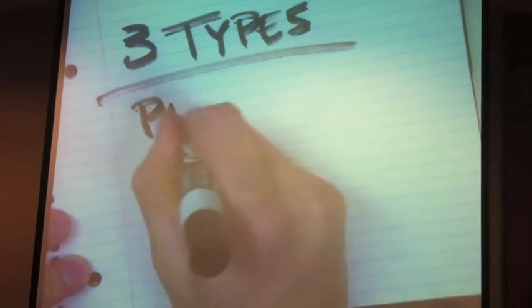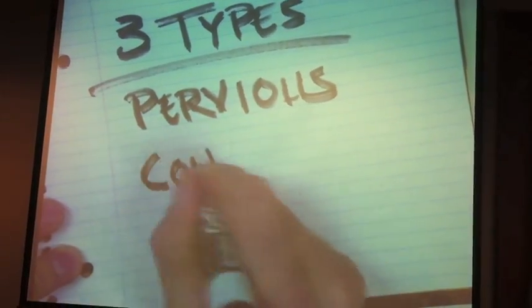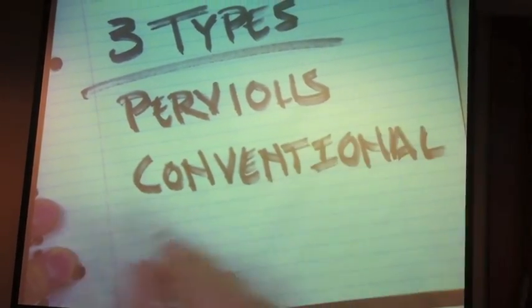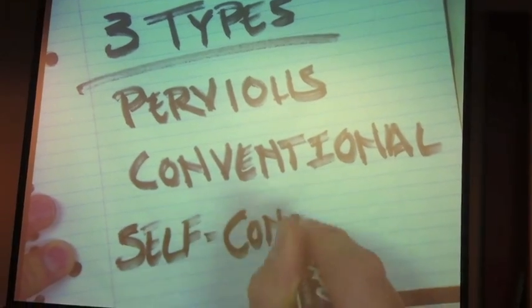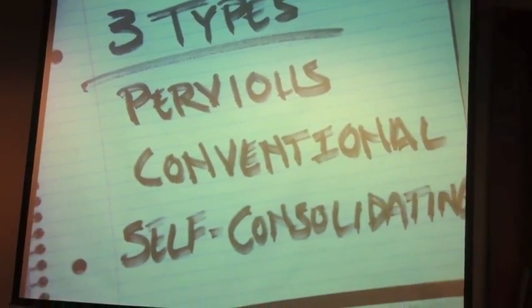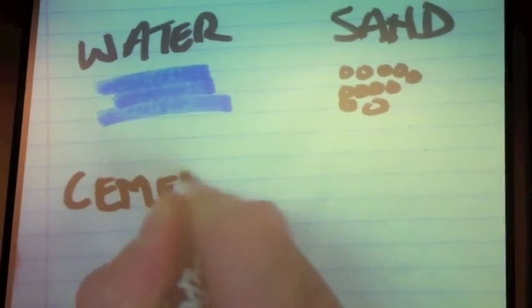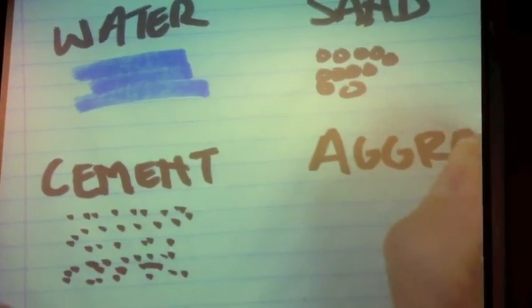In our concrete mix design lab we work with three different types of concrete: pervious, conventional, and self-consolidating. Concrete has four main ingredients: water, sand, cement, and aggregate or rocks.